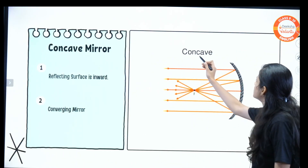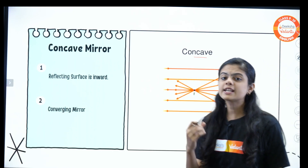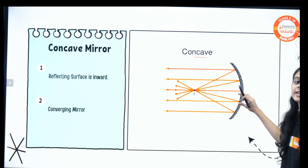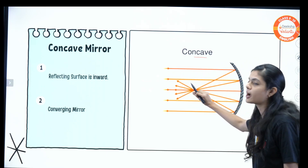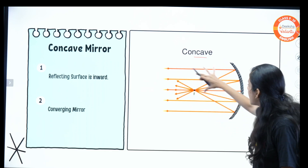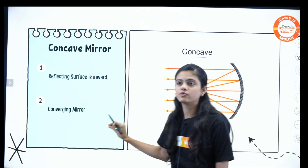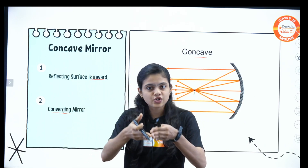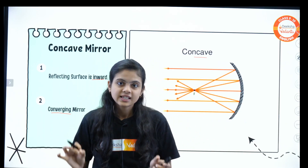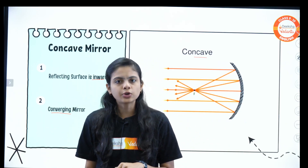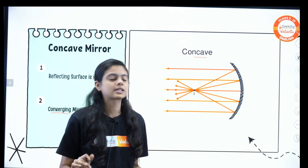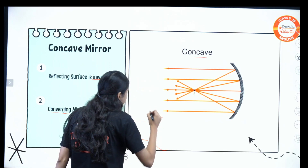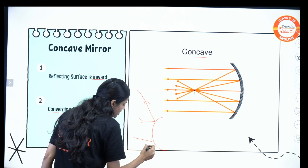A concave mirror is a converging mirror. Parallel rays falling on a concave mirror converge at a particular point called the focus. Hence it is called a converging mirror. Opposite to this, a convex mirror is a diverging mirror — parallel light rays falling on a convex mirror get diverged.